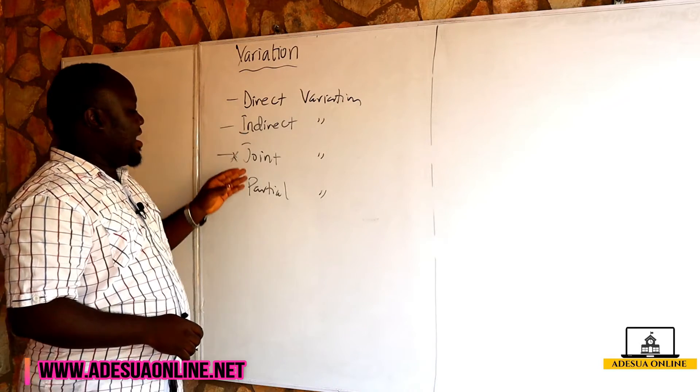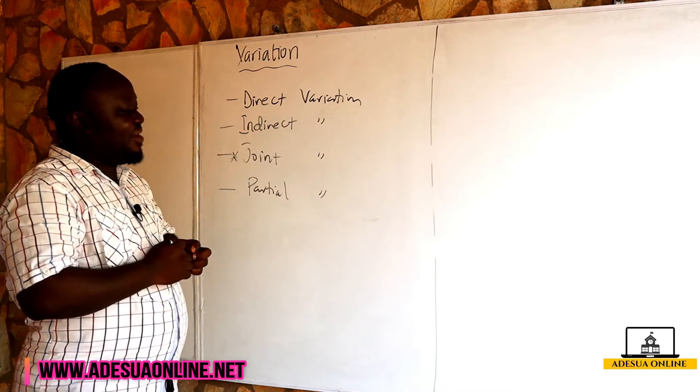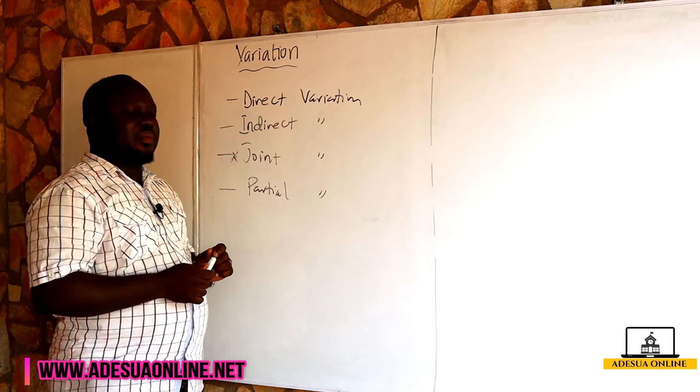We have direct, indirect, joint (which is a combination of the direct and indirect), and partial variation. We are going to start with direct variation and pick it up from there.